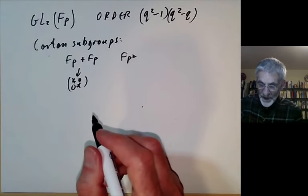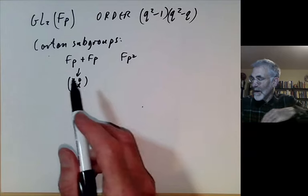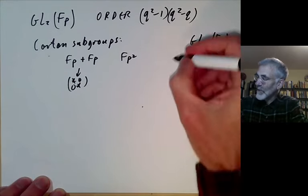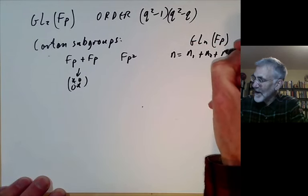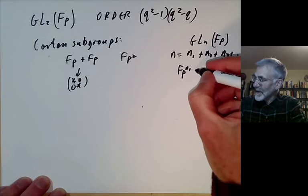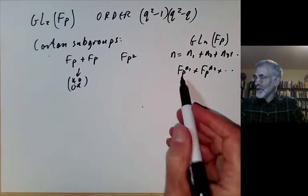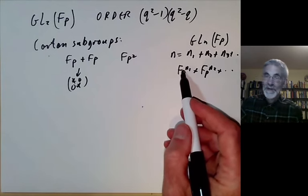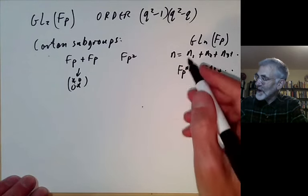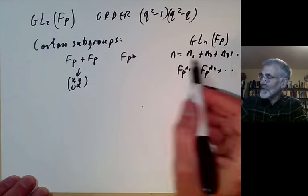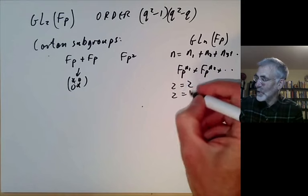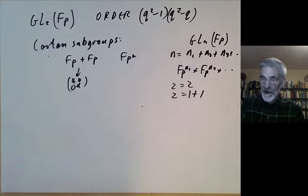The split extension F_p + F_p gives us the diagonal Cartan subgroup, while F_{p²} gives us a Cartan subgroup that looks a bit like the complex numbers. Incidentally, you can describe the Cartan subgroups of GL_n(F_p) similarly: write n = n₁ + n₂ + n₃ + … and F_p has an extension F_{p^{n₁}} × F_{p^{n₂}} × …, giving a Cartan subgroup of nonzero elements in each factor. The number of Cartan subgroups corresponds to the number of partitions of n — for n=2, there are two partitions (2, and 1+1).